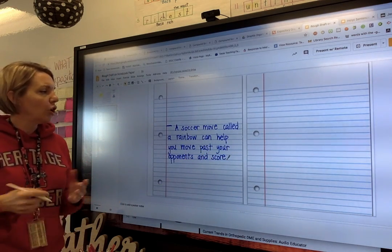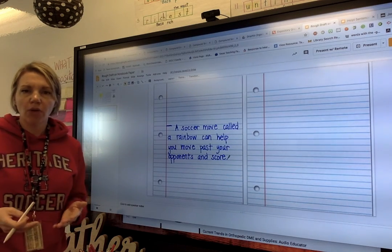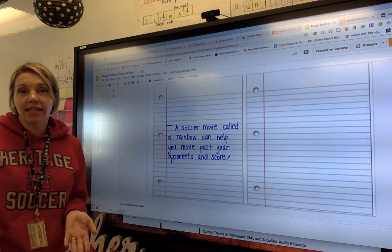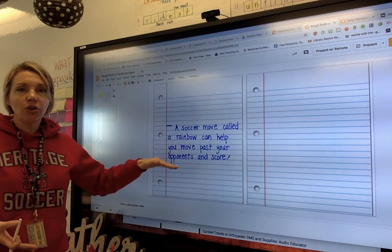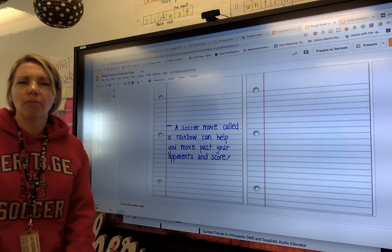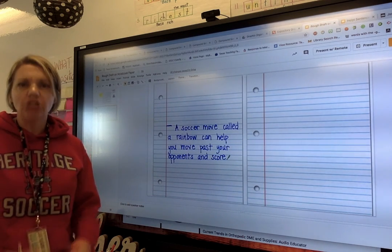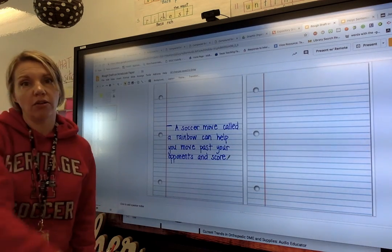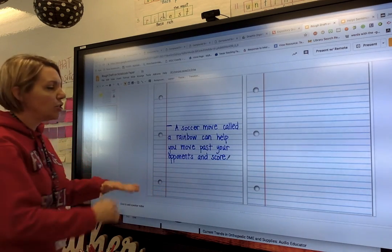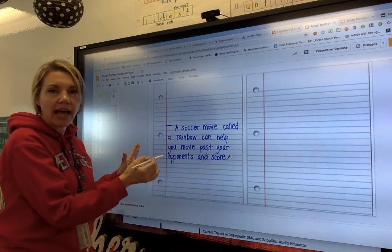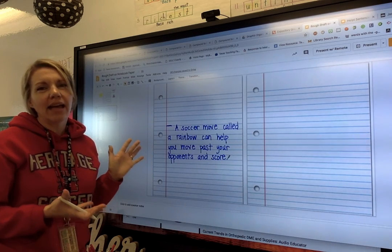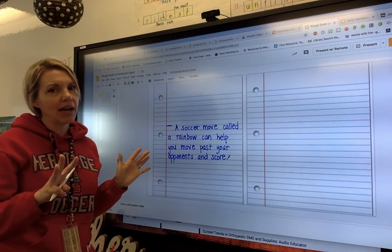A soccer move called a rainbow can help you move past your opponents and score. Here's one way that she can introduce that she's about to explain what a rainbow is. Then she'll go through and explain what a rainbow is. I think I remember her saying that your ball needs to be between your feet. You're going to jump up and throw the ball over your head. So that's what her next sentences will say. So whatever she chooses to explain, she's not done. And even two sentences is not enough to fully explain. You need at least three to four. Three is even cutting it close.